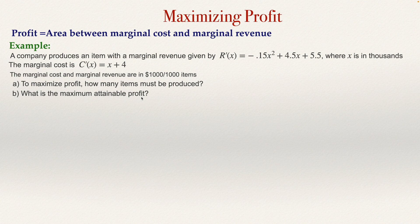The marginal cost and the marginal revenue are in thousands per thousand items, and X is given in thousands. So if I type one or two, it means one thousand or two thousand. So to maximize profit, how many items must be produced?